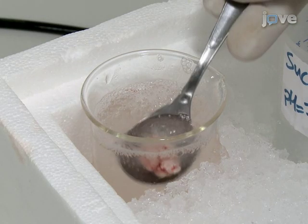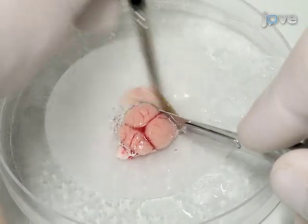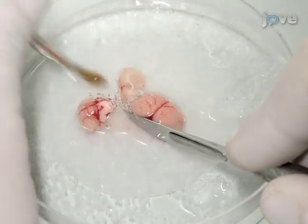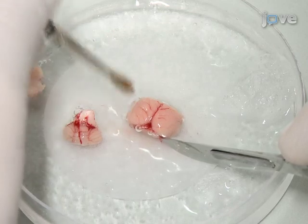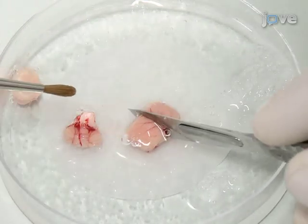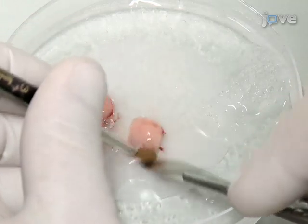Take the brain from a 17-to-24-day-old transgenic rat expressing fluorescent venous YFP kept in semi-frozen carbogenated sucrose ACSF. Using a scalpel, remove the frontal third of the cortex, the cerebellum, and separate the hemispheres.